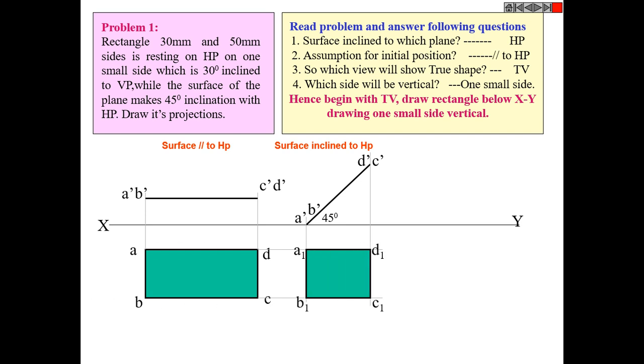Construct the second position top view. Now observe one of the small sides on which it is resting is inclined at 30 degrees to VP. So now the side resting is a' b', that is ab, that has to be inclined at 30 degrees to VP.